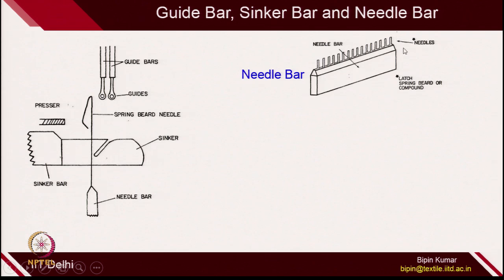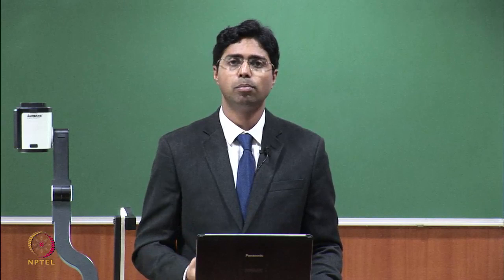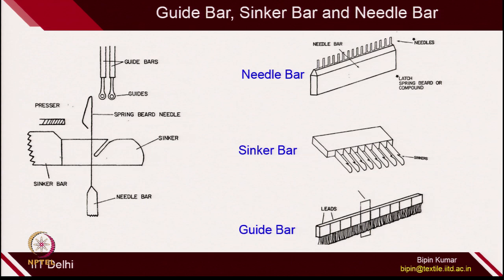For knitting to be performed, these 3 elements — needle, sinker, and guide — are extremely important. In warp knitting, unlike weft knitting, all the needles, all the sinkers, and all the guides have exactly the same motion and displacement at the same time. They are fixed on a block and the whole block moves together. This is why warp knitting production is much faster — you can engage all needles to catch yarn and release old loops simultaneously.